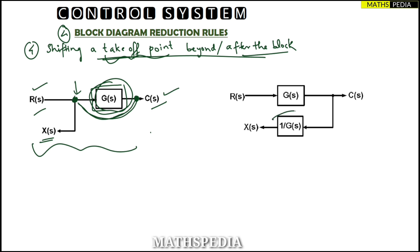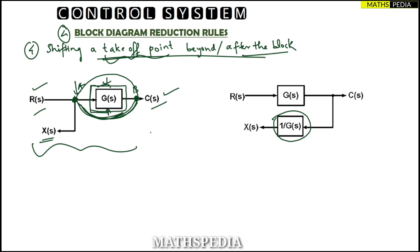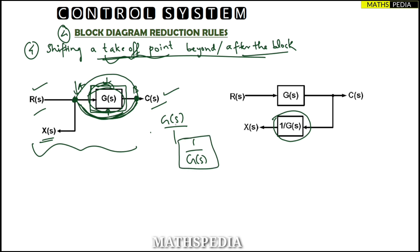You cannot simply just pass it over, so the rule is that you have to take the reciprocal of the block which you have jumped. Observe: you are jumping from point A to point B. Above or below you have this block — if you're jumping from here to here, the block will be below; if jumping the other way, it will be above. This block you have passed — you have to take its reciprocal. Reciprocal means if it is G(s), the reciprocal will be 1/G(s). This reciprocal block must be added to the signal line which has been shifted.